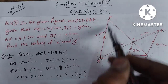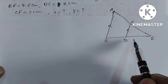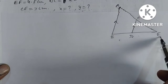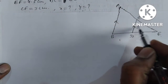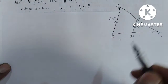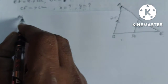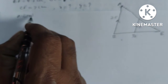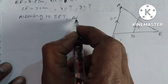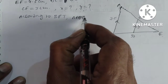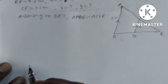So, I have to find this triangle. We identify triangle ABE, and triangle CDE. According to the basic proportionality theorem, triangle ABE is similar to triangle CDE.